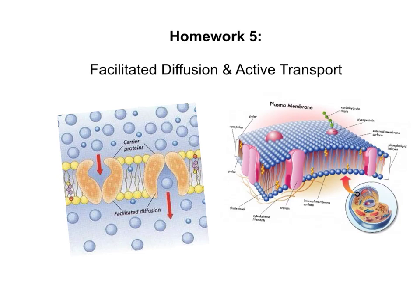Hello, Halton Biology students. This is homework number five about facilitated diffusion and active transport. You're going to see a lot of what we've been talking about this week with the cell membrane and the different parts of the cell membrane throughout this homework video, but it's going to be a little bit different than what we've talked about so far. Make sure that you're taking Cornell notes on this — you'll be turning that into your teacher tomorrow.